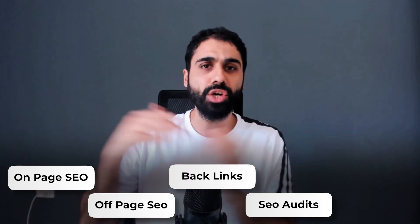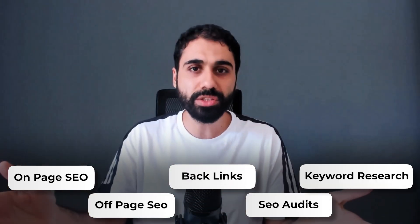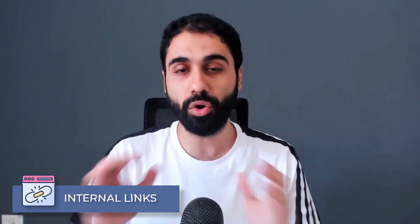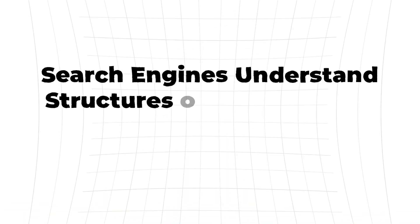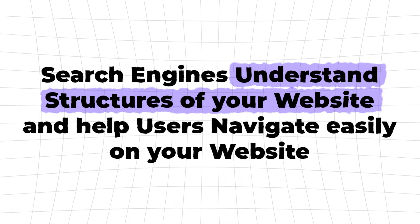In SEO we have a lot of tasks: on-page SEO, off-page SEO, backlinks, SEO audits, keyword research, and much more. Today I want to tackle and help you automate a specific task in SEO to save you a lot of time, which is interlinking — or what we call internal links. One of the main tasks in SEO is to create links internally in your website. This helps search engines understand the structure of your website and helps users navigate easily.